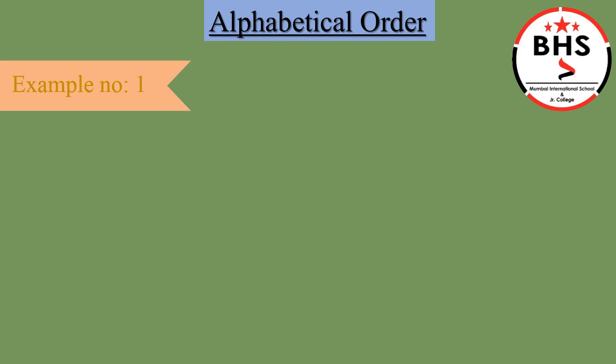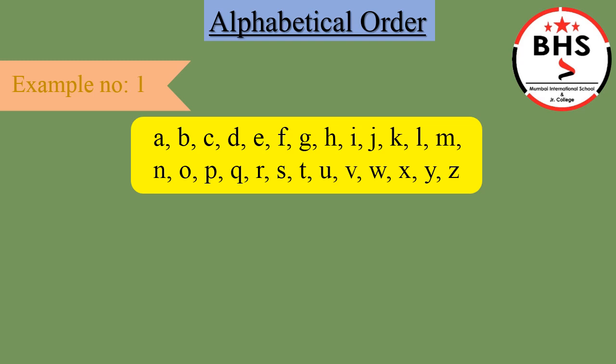I'll show you a few examples of how to arrange the words in alphabetical order. Let us start with Example Number 1. These are the letters of the English alphabet. It starts from A and ends with Z. This order or sequence from A to Z will help us to arrange the given words alphabetically. Let us start. Monkey, elephant, tiger. Here, we have to look at the first letter of each word. The first letter of monkey is M. The first letter of elephant is E. The first letter of tiger is T.